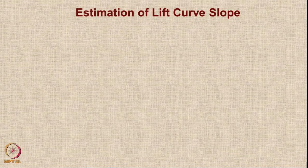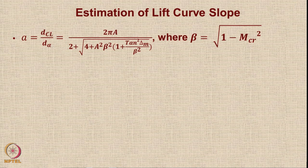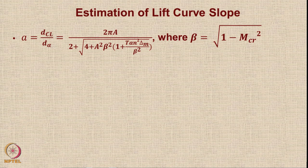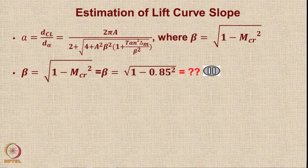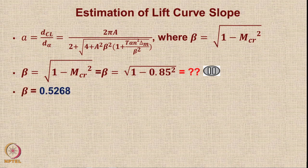Let us now estimate the lift curve slope, using the formula a = dCL/dα. This is estimated in terms of wing aspect ratio A, parameter beta = √(1 − M_cruise²), and delta_m, the sweep of the maximum thickness line. In our case, beta = √(1 − 0.85²). Please pause and calculate this value. Beta turns out to be 0.5268.